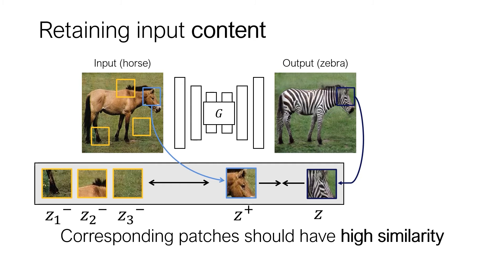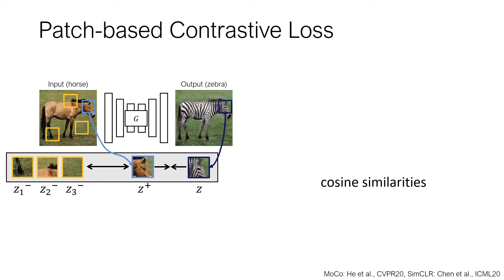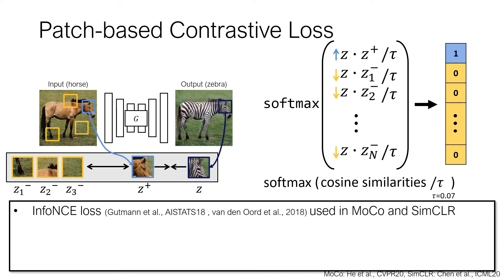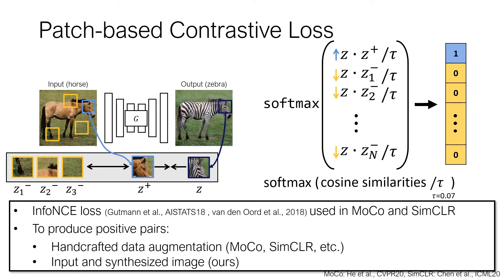The corresponding input and output patches form a positive pair. Patches from other locations form negative pairs. In more detail, we use cosine similarities. We maximize the similarity of the positive pair while minimizing that of the negative pairs. We do this by formulating a classification task with the target class as the positive pair. Such formulation, called info-NCE, was introduced and used in several works in representation learning. However, unlike MoCo and SimCLR that used hand-designed data mutation to produce positive pairs, we use the outputs of the generator that's learned at the same time.